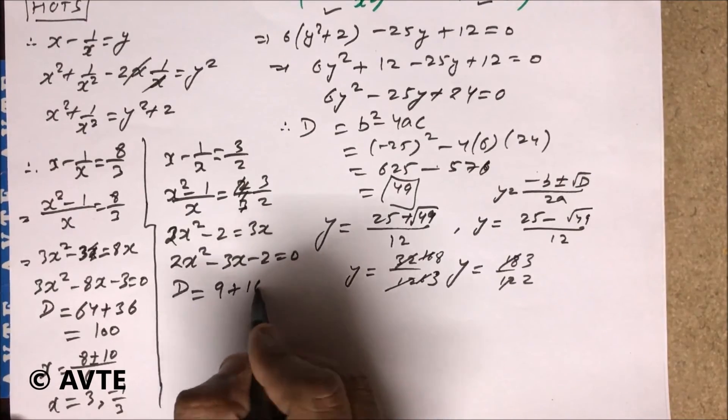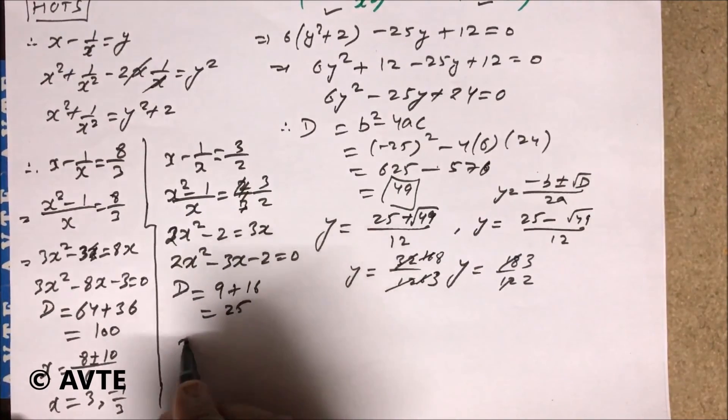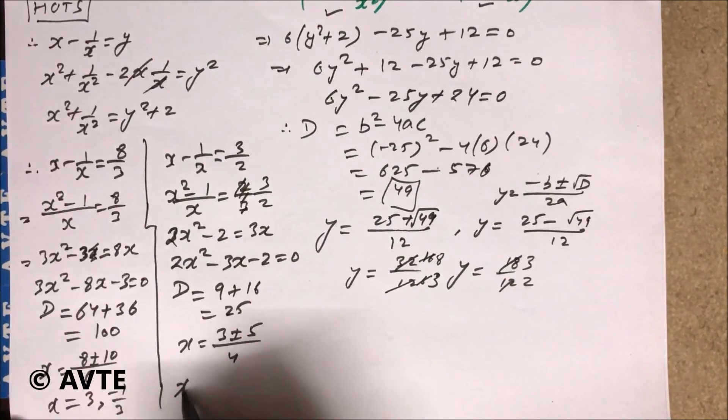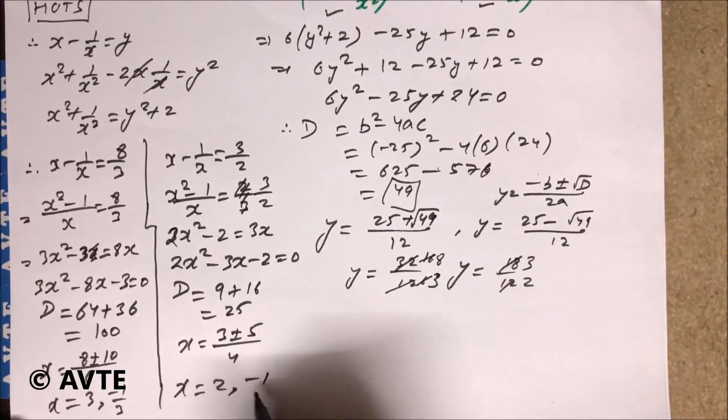Your x is equal to 3 plus minus 5 by 4. So your x is equal to 2 or minus 1 by 2.